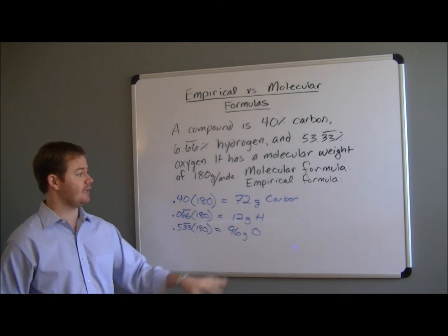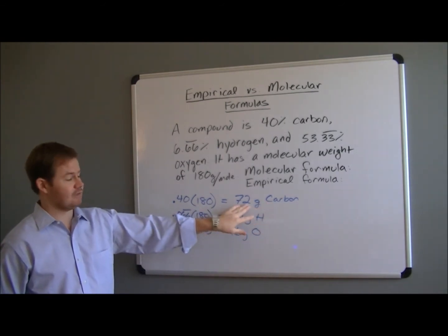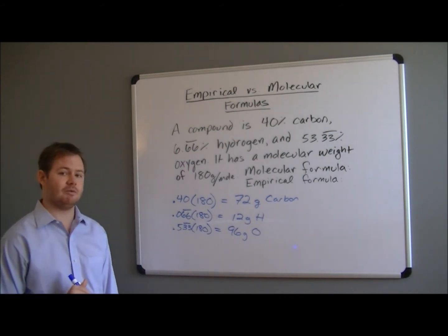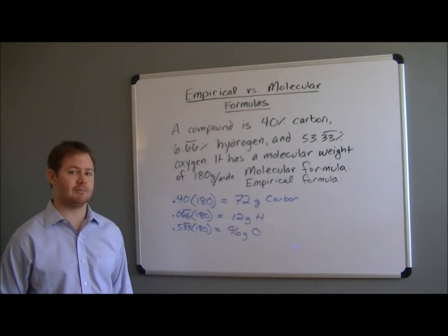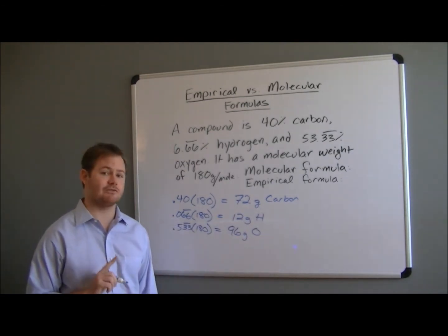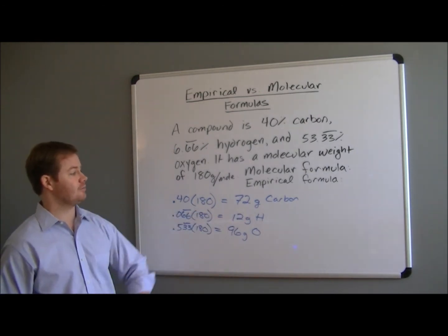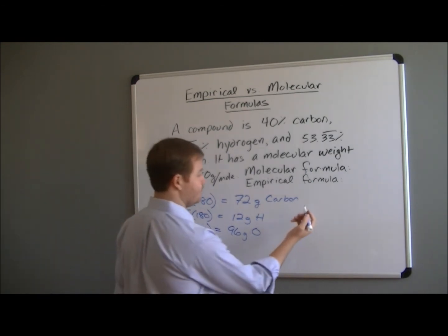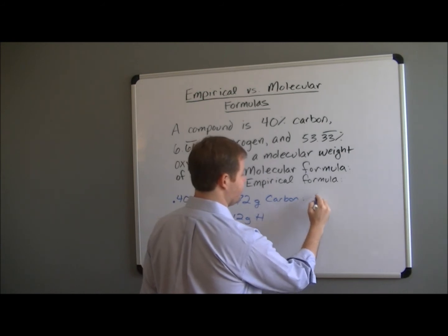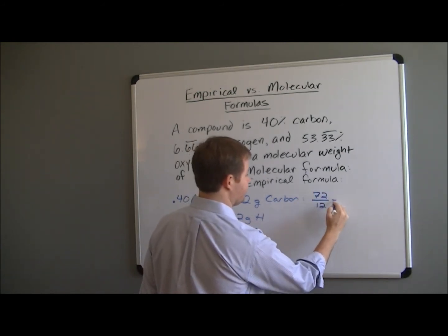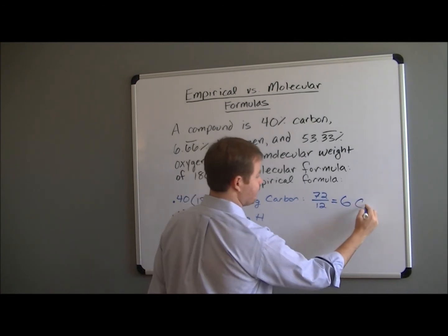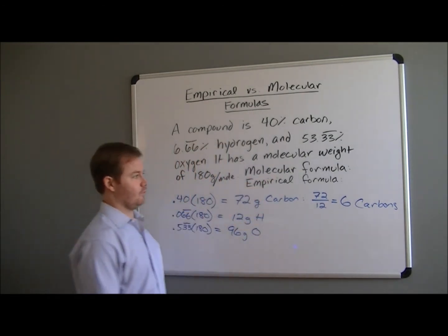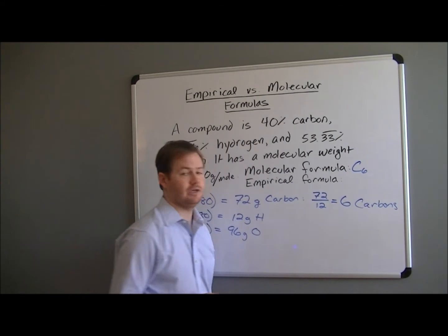What we have to do in this case to find out the number of carbons that would comprise 72 grams is we have to use our periodic table and look at the atomic mass. And on our periodic table, we see that for carbon, if you look at the bottom of that square on your periodic table, carbon has an atomic mass of 12 grams. So 72 grams of carbon would indicate that you have 6 of those carbons. And we calculate that by dividing by 12. So here for carbon, if you do 72 divided by 12, we get 6. So we're going to have 6 carbons in our molecular formula.